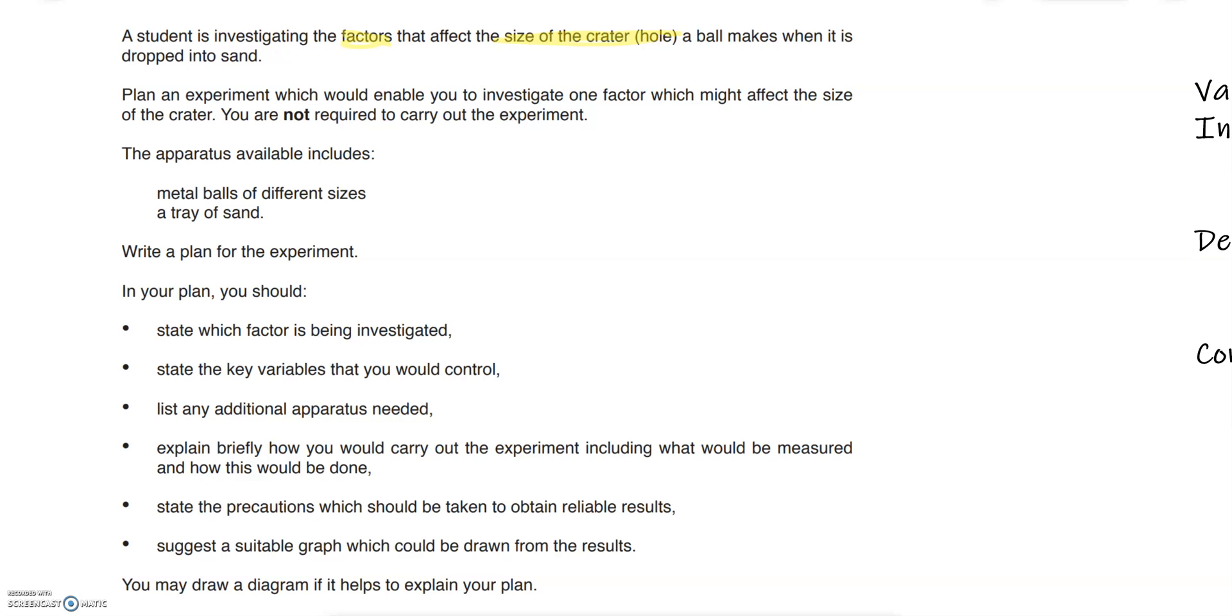So that's really important, that sentence tells you straight away this is the variable you're going to measure, and then you are going to choose a factor which affects this variable. You have to plan an experiment which will enable you to investigate one factor. Sometimes they say they want you to investigate something, but in this case you've got free choice.